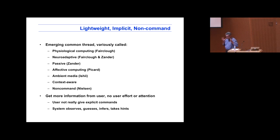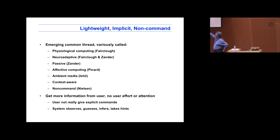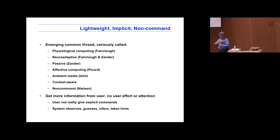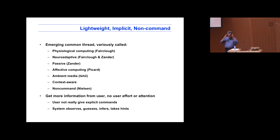I've been interested in an emerging thread of interfaces that get information from a person in a lightweight sort of way — without really asking them for anything, without having you set any controls. They just sort of find out about your state. There's a collection of names for this: Rosalind Picard's affective computing, physiological computing. There's a general trend in obtaining information from the user in a passive way. You don't actually do something you think about — the computer just finds out. If you don't give any explicit commands, the computer makes an inference about your state.